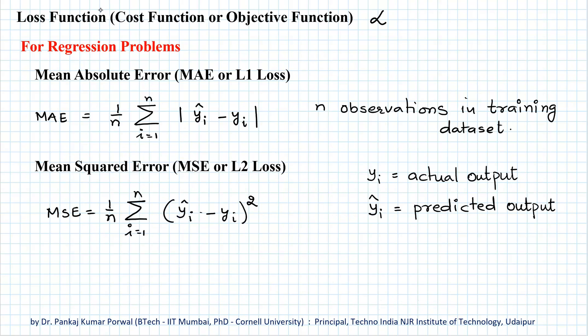The function that measures the cumulative error for all the input-output pairs is called loss function or cost function, and as our objective is to minimize this loss function, this is also called our objective function. Now there are several loss functions that our artificial neural networks can use for learning from our training dataset, and we will select an appropriate loss function depending on the type of problem that we are interested in solving.